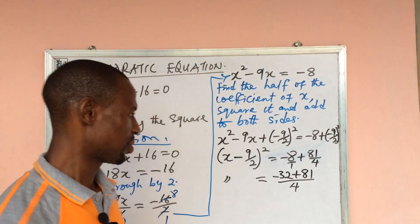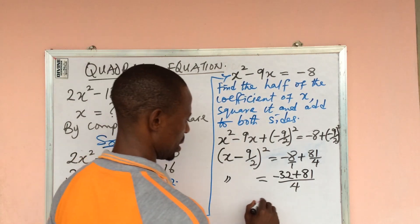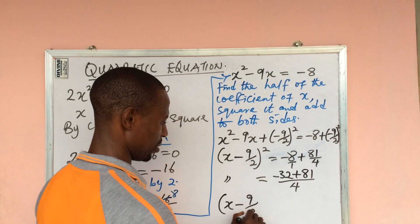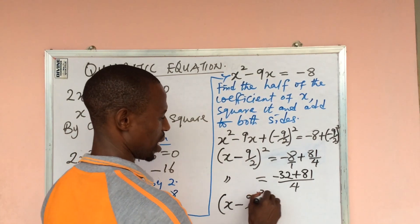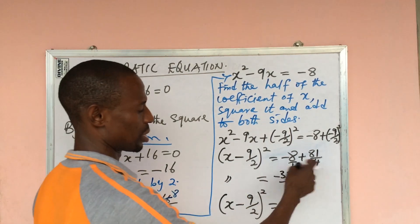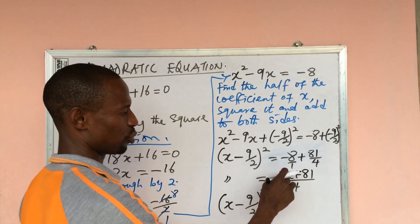Plus 4 into 1 times 81 will give us 81. Very simple. So from here we proceed again. So let's bring out our term here: (x - 9/2)² = -32 + 81.